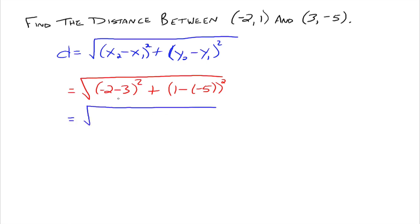And then just do the arithmetic. So we have the square root. Negative 2 minus 3 is negative 5 squared. Yes, you do need those parentheses. Plus, this goes to, what is that, 1 plus 5? This goes to 1 plus 5. So this goes to 6 squared. 6 squared. And so then that goes to the square root of 25 plus 36.